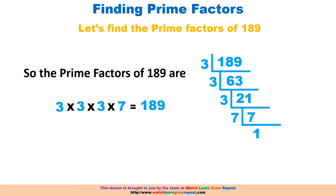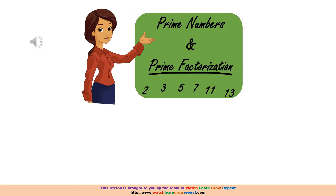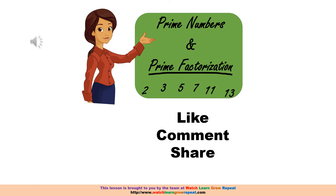Let's do a quick recap: we looked at what prime numbers are and the classical definition, then we made a grid of numbers from 1 to 100 and used it to find all the prime numbers in that range, and finally we looked at how to find the prime factors of a given number. That's it for this video on prime numbers and prime factorization — please remember to like, comment, share, and subscribe. Thank you.